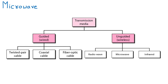Now we are starting the topic which is microwave. We already know that transmission media is divided into two parts: guided and unguided. Guided means wired — like twisted pair, coaxial cable, and fiber optic. The second part is unguided, which is called wireless. In the wireless category we have the microwave, so today we are discussing the microwave.